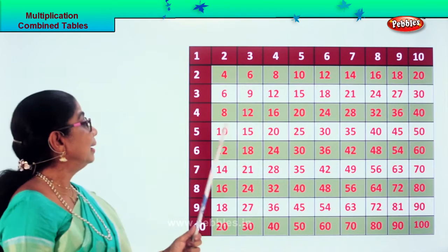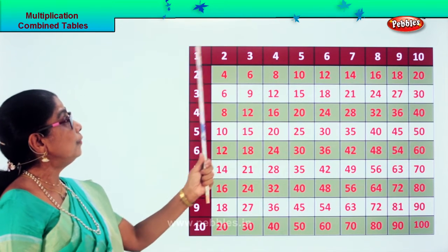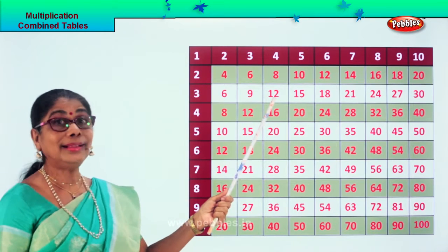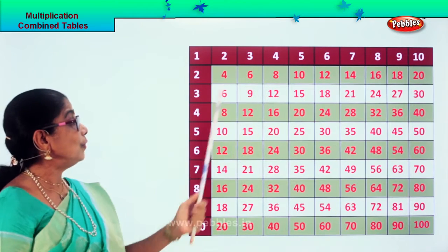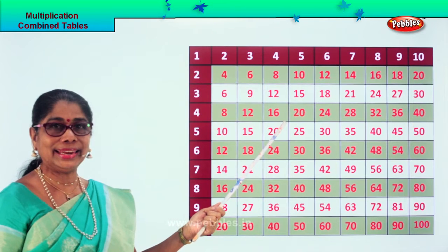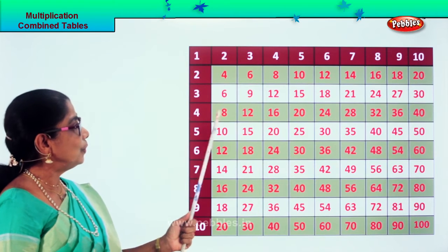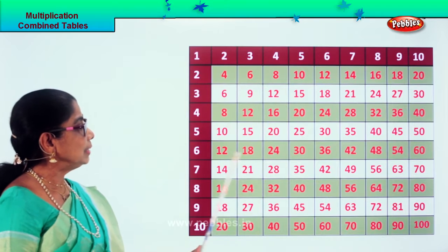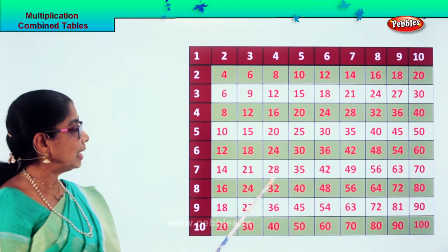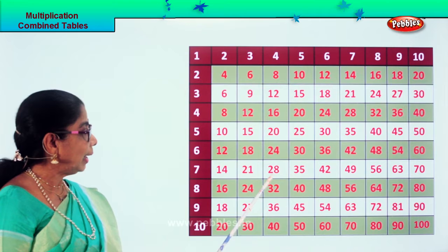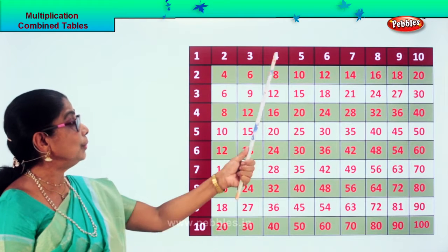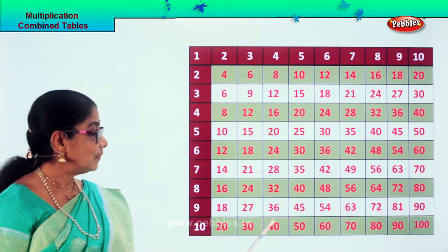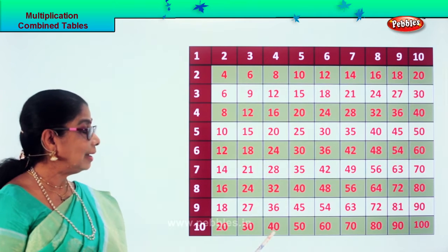Now here — four ones are four, four twos are eight, four threes are twelve, four fours are sixteen, four fives are twenty, four sixes are twenty-four, four sevens are twenty-eight, four eights are thirty-two, four nines are thirty-six, four tens are forty. Let's look at five.